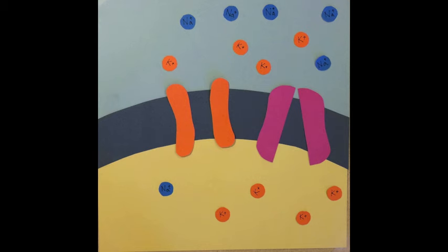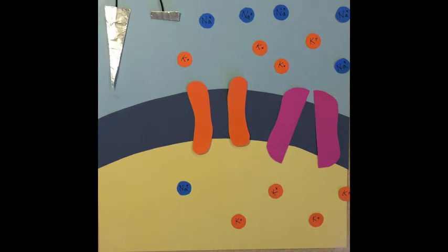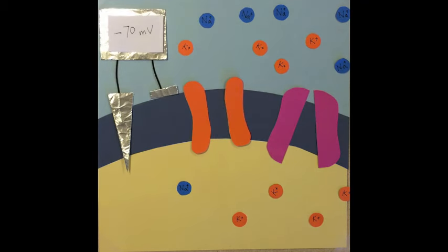A typical cell will have a resting voltage of about negative 70 millivolts across the cell membrane.